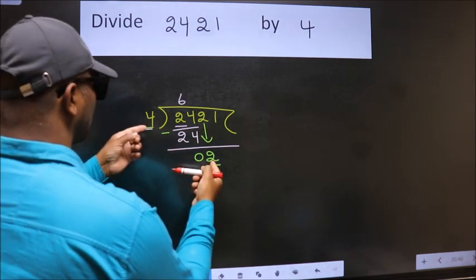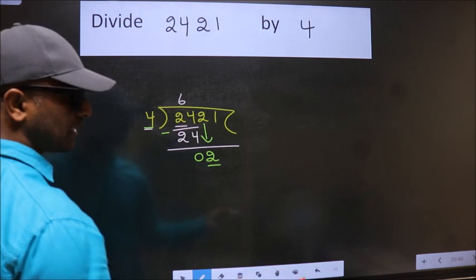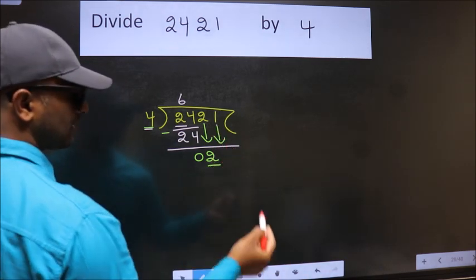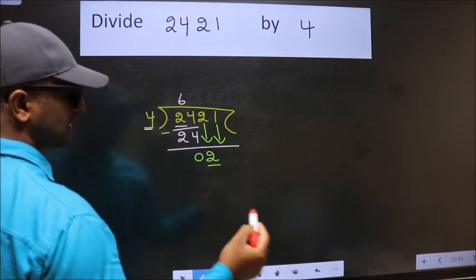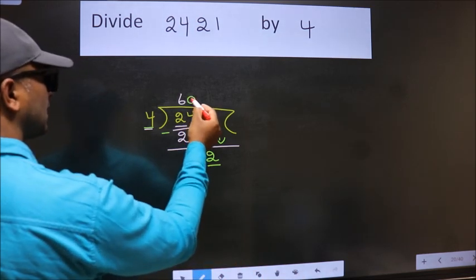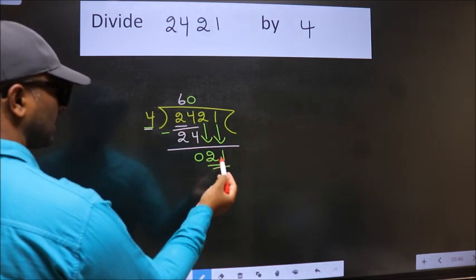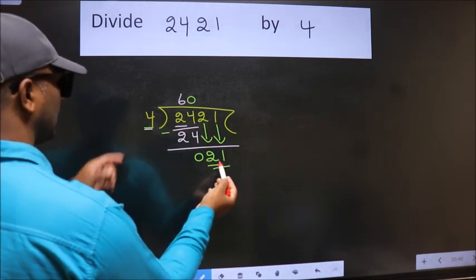We should bring down the second number. The rule to bring down the second number is to put 0 here; then only we can bring this number down. So 21. A number close to 21 in the 4 table is 4 times 5 equals 20.